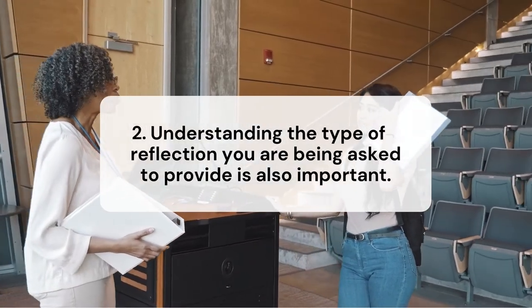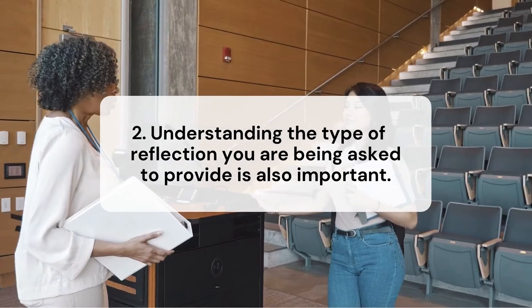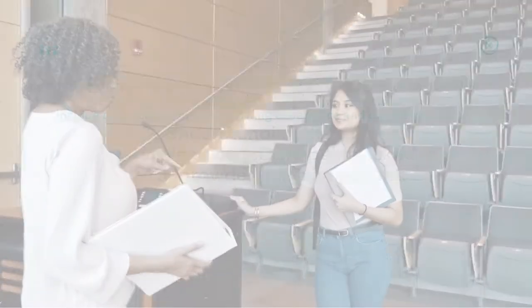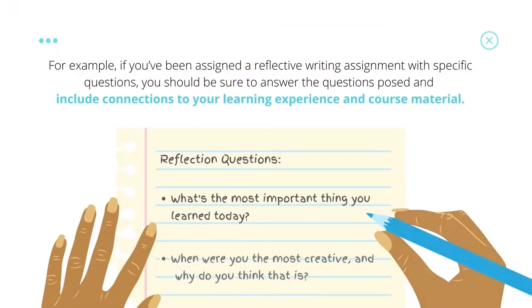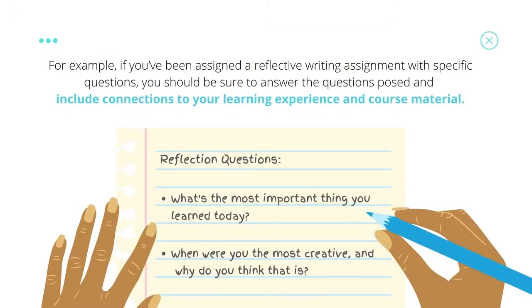Understanding the type of reflection you are being asked to provide is also important. For example, if you've been assigned a reflective writing assignment with specific questions, you should be sure to answer the questions posed and include connections to your learning experience and course material. Writing a reflection for class will look different than writing a daily reflection in your personal journal.